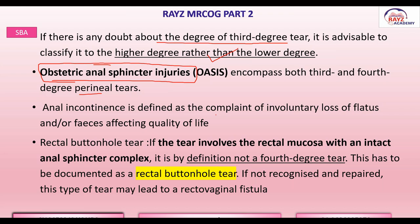Anal incontinence is defined as a complaint of involuntary loss of flatus or feces which affects quality of life. There is another type of tear not classified in the Sultan classification: the rectal buttonhole tear. If the tear involves the rectal mucosa with an intact anorectal sphincter, it is by definition not a fourth degree tear. There is a communication between vaginal and rectal mucosa but the sphincter is intact. Failure to recognize and repair this tear will lead to rectovaginal fistula.